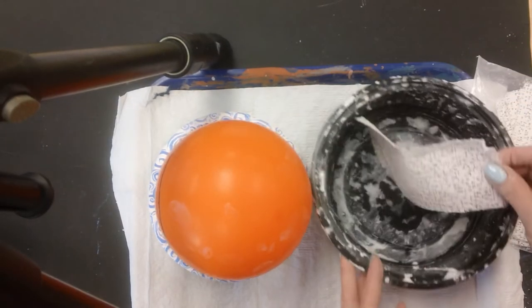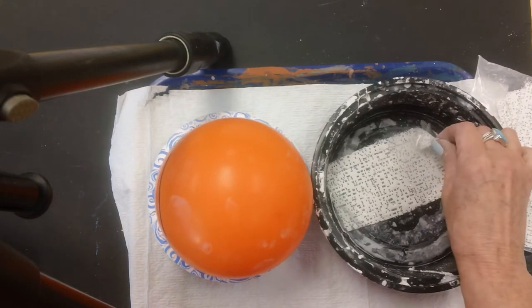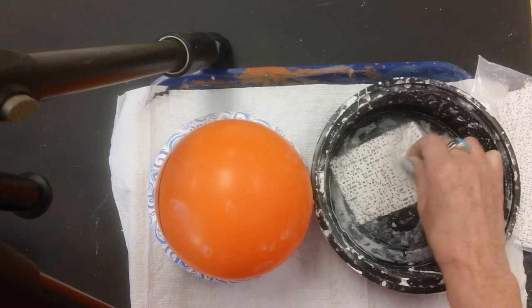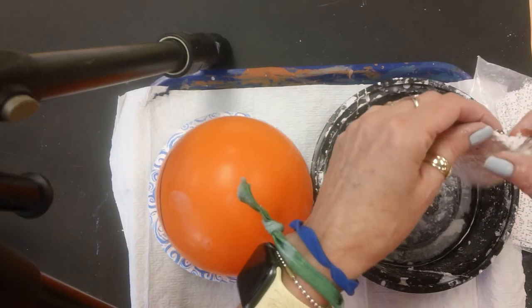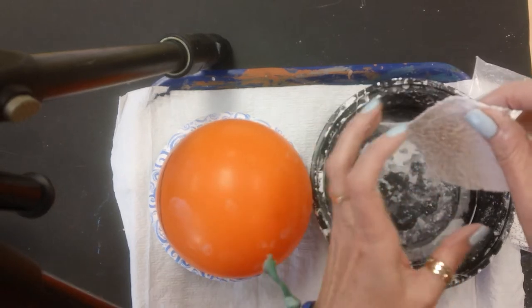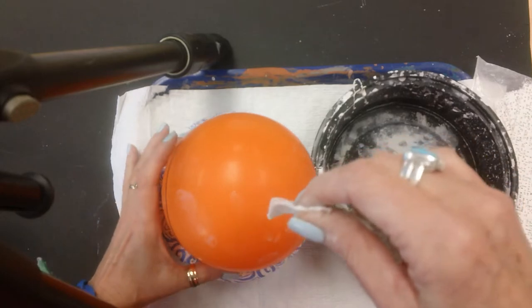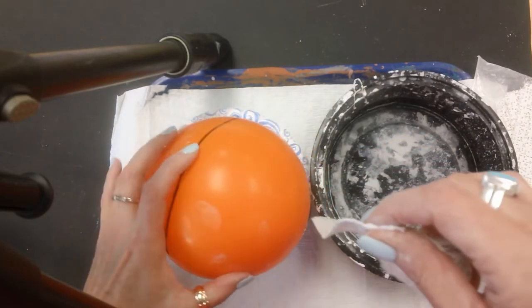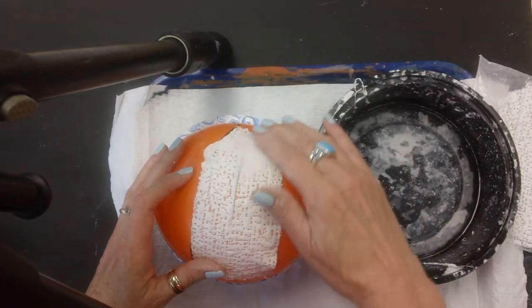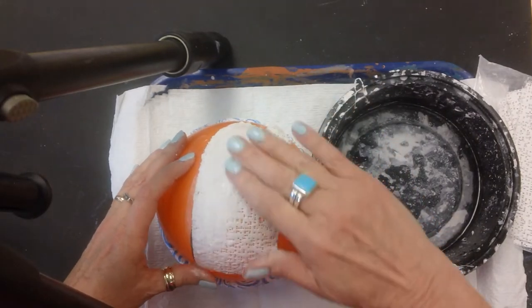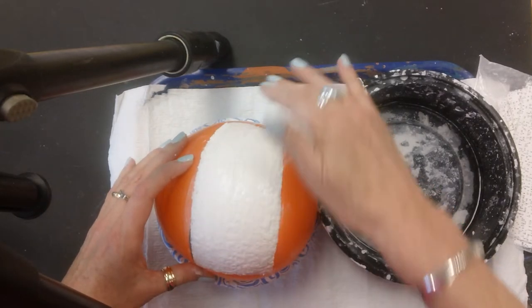The plaster strips have to go right into the water to get wet, but I'm still holding on to it. Now when I lift it up, you want to keep it as a rectangle. So you don't want to have it all scrunch up on itself. Now I'm going to go over to the balloon to where I see the black line. And I'm going to put my first strip down right on that black line. And see how I'm smoothing this out with my fingers? That's what you want to do.